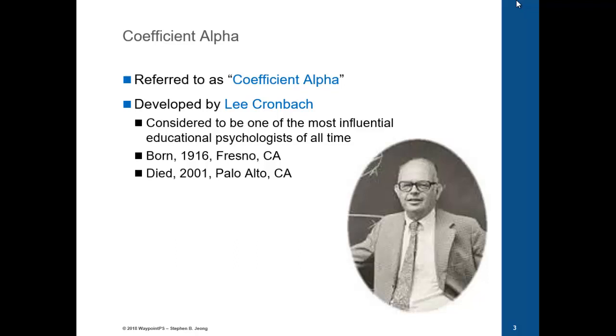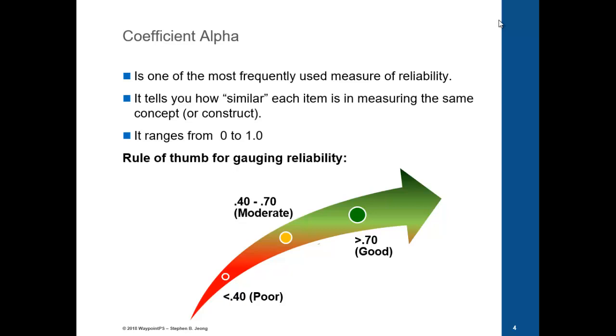Quickly, Coefficient Alpha was developed by a guy named Lee Cronbach. He was an educational psychologist at UCLA. He was born in Fresno and later moved to Palo Alto in the 90s. This is important. You'll see his picture here on the right.